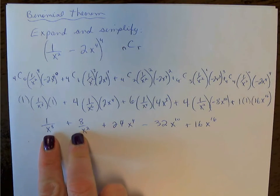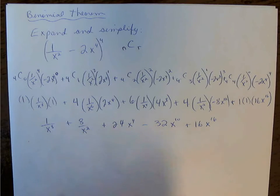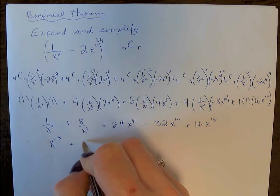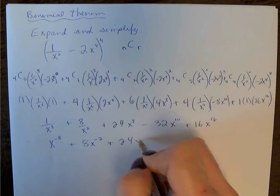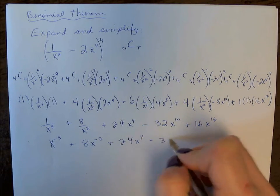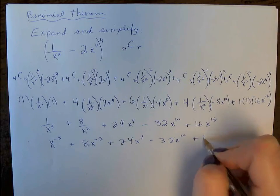It is also acceptable to write these with negative exponents, so this could also be written as x to the -8, plus 8x to the -2, and the remaining part of the expansion would be the same.